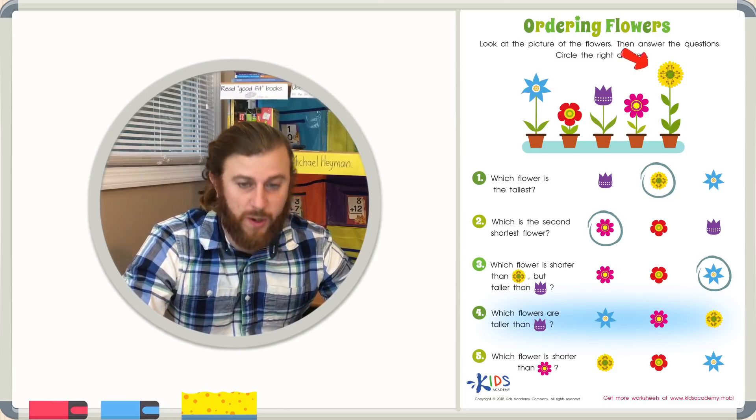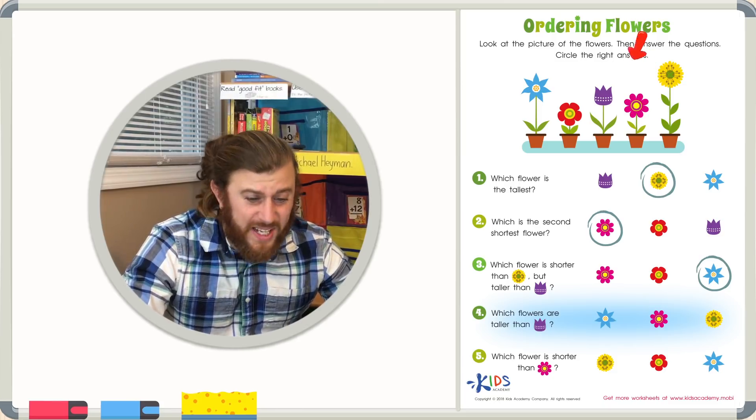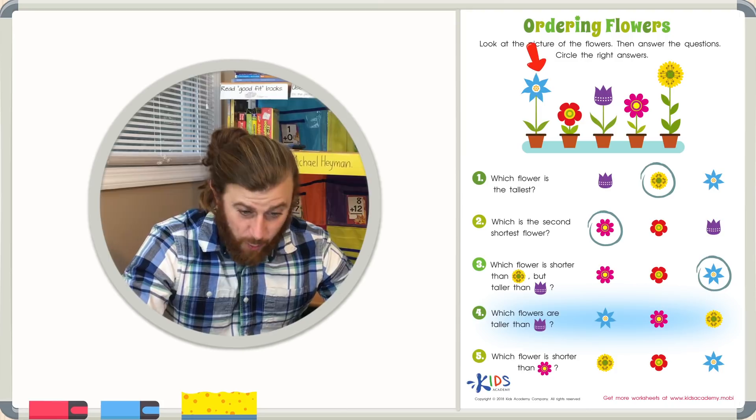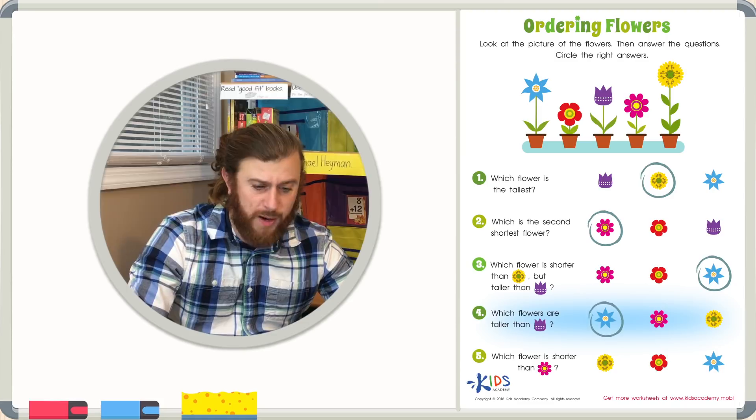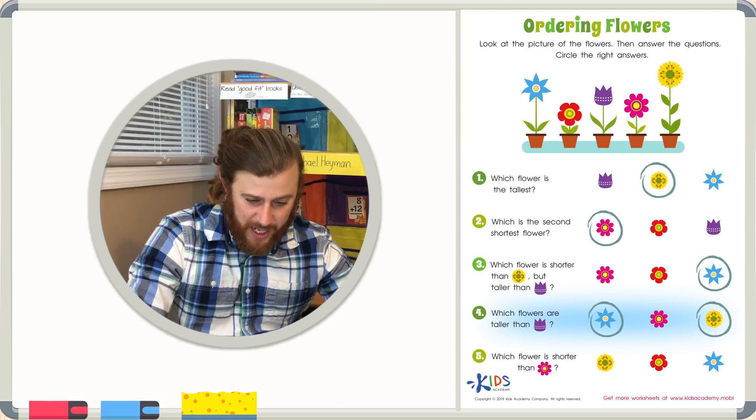we know the yellow flower is taller than the purple flower, and so is the blue flower. The red flower and the pink flower are shorter than the purple flower. So the blue flower and the yellow flower are the correct answers.